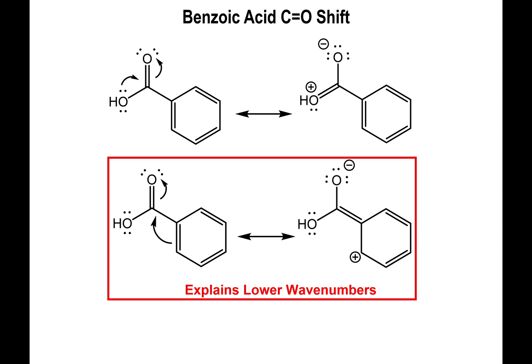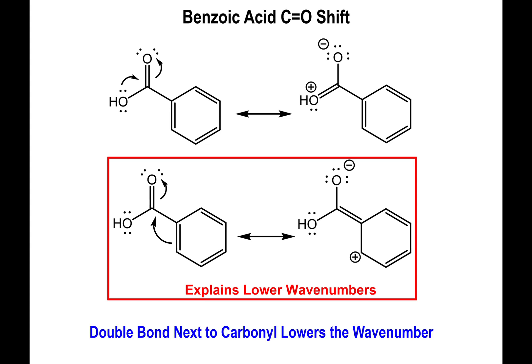This resonance explanation is not exclusive to carboxylic acids — it can also happen with aldehydes and ketones. So keep that in mind: conjugation will lower the wavenumber values of the carbonyl peak.